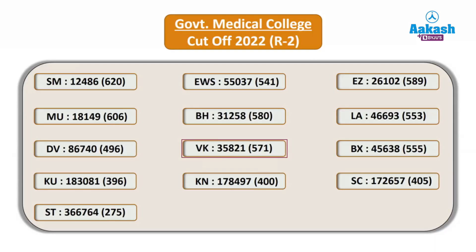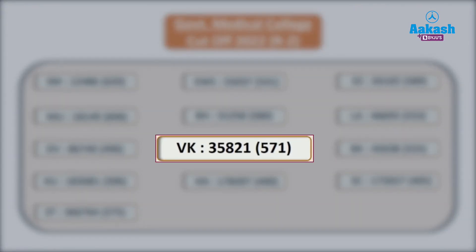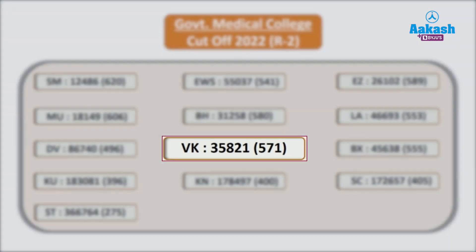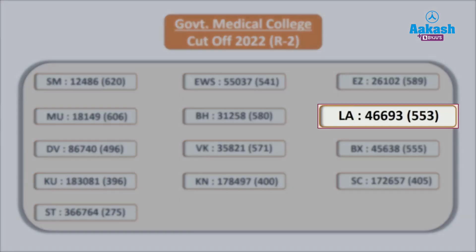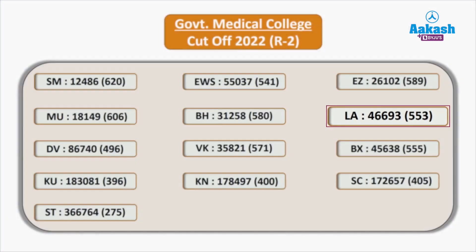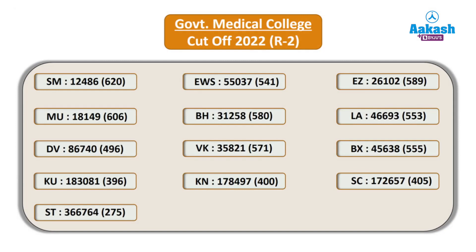For BH (Backward Hindu) category, rank 31,258 and marks 580. For VK (Vishwakarma and related communities), rank 35,821 and marks 571. For KN (Kusavan and related communities), rank 1,78,497 and marks 400. For EZ (Ezhava) category, rank 26,102 and marks 589. For LA (Latin Catholic and Anglo Indian), rank 46,693 and marks 553. For BX (Other Backward Christian), rank 45,638 and marks 555. For SC category, rank 1,72,657 and cutoff marks 405.